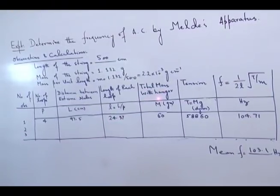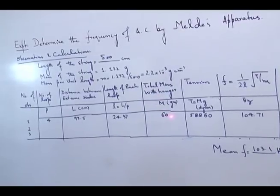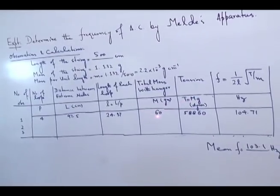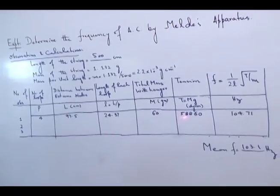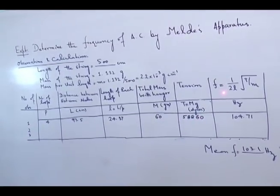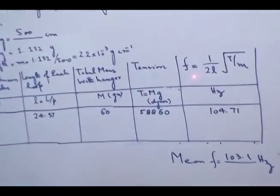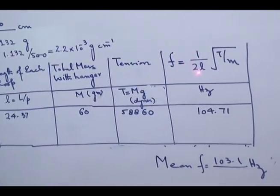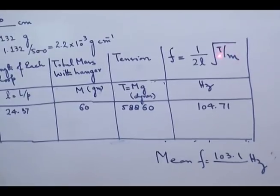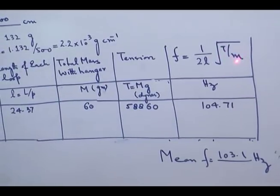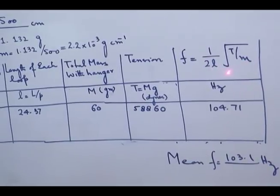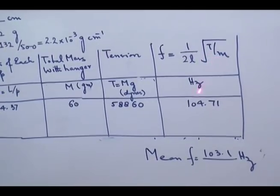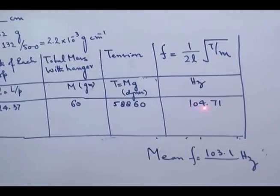The total mass hung on the hanger was 60 grams. Tension in dynes is mass multiplied by 980, giving T = 5 × 10⁴ dynes. The formula for frequency is: f = 1/(2L) × √(T/m), where T is the tension in the string and m is the mass per unit length. Substituting the values of loop length, tension, and mass per unit length, the answer is 104.71 Hz.